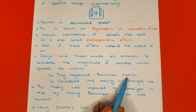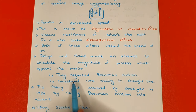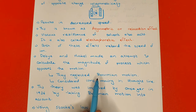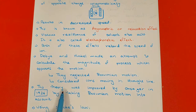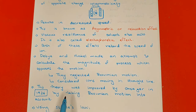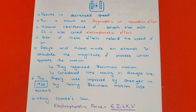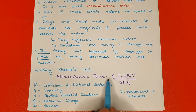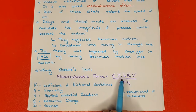Debye and Hückel neglected the Brownian motion and considered the ions to be moving in straight lines. This theory was later improved by Onsager, who took Brownian motion into account in his equation.